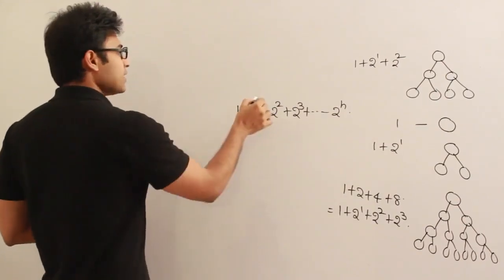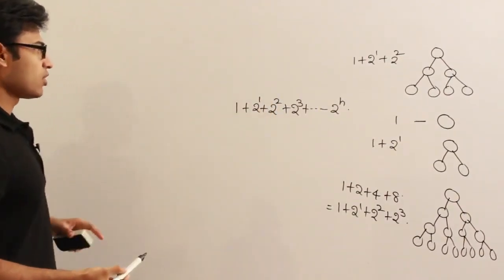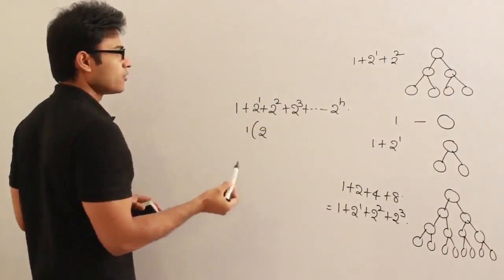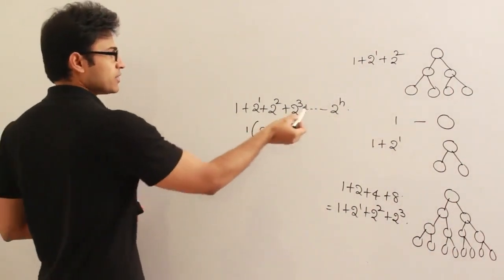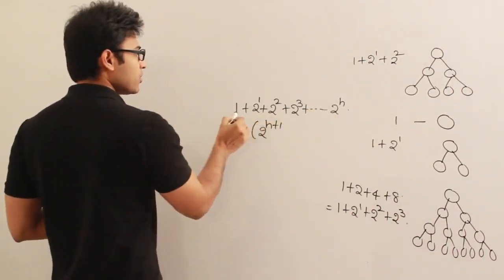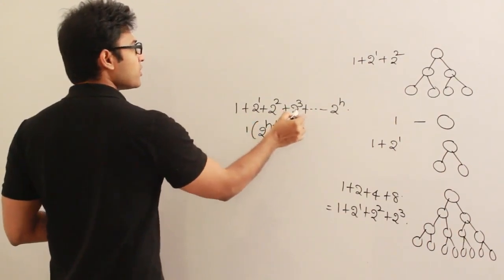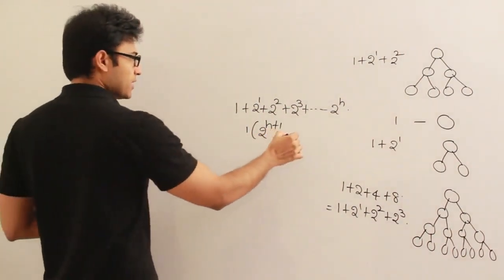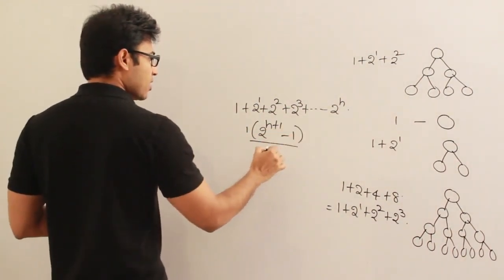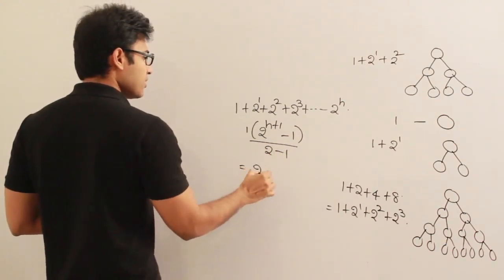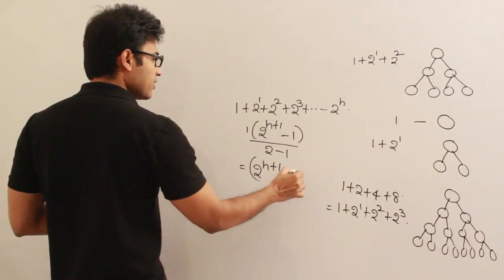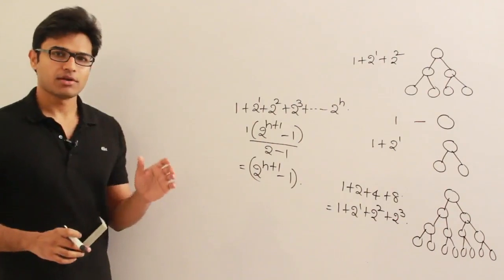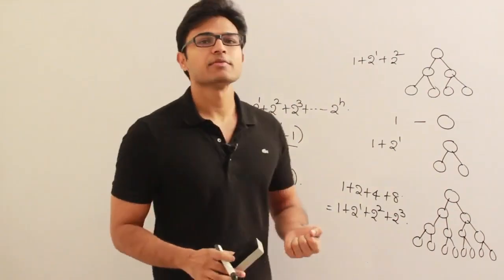This is a geometric series with common ratio 2. Using the formula a*(r^n - 1)/(r - 1), we have h+1 elements (from 2^0, 2^1, ..., 2^h). This gives us 2^(h+1) - 1, divided by r-1 = 2-1 = 1. Therefore, the maximum number of nodes that can be present either in an AVL tree of height h or in a normal binary tree of height h is 2^(h+1) - 1.